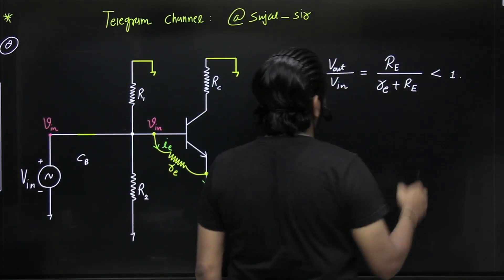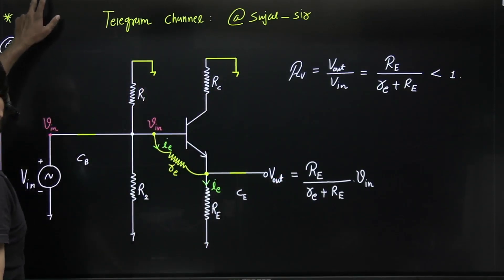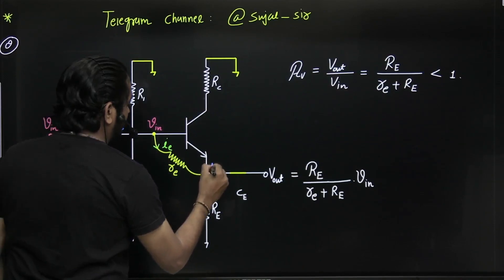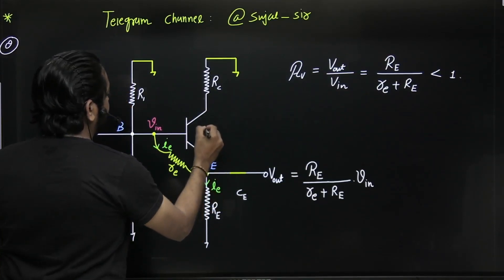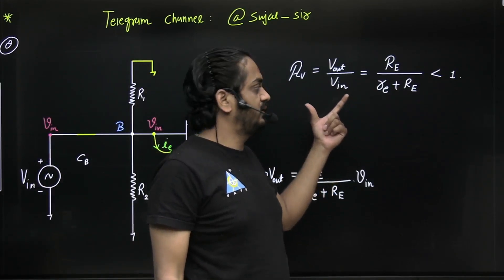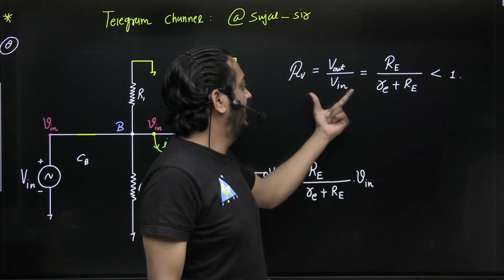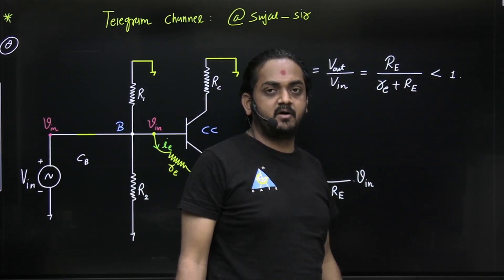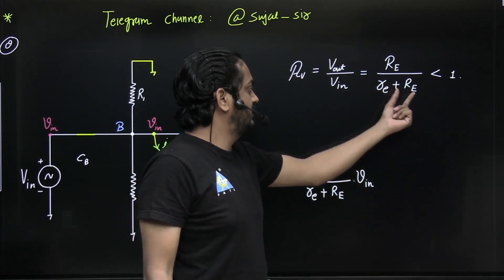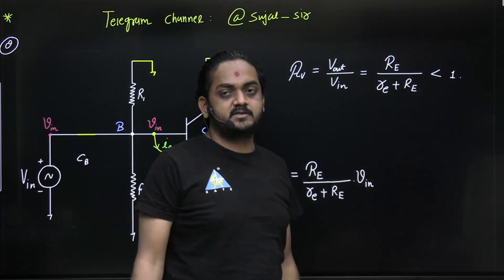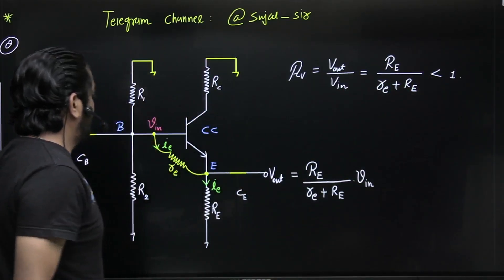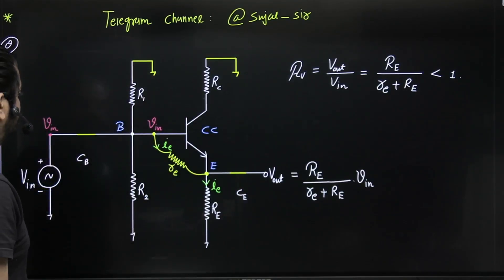The voltage gain will always be less than one. Now, which configuration is this? The input is given to the base terminal and the output is taken from the emitter - so this is the common collector configuration. In common collector there is no 180° phase shift and voltage gain is always less than one. In the best case, if capital RE is much larger than small re, you can get a voltage gain approaching one.